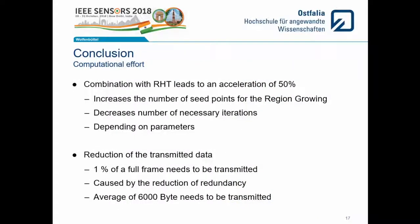In conclusion, we combined two algorithms. The combination of the randomized Hough transformation with the region-growing algorithm leads to an acceleration of the data method of around 50%. This was achieved by increasing the number of seed points and thereby decreasing the number of necessary iterations, which significantly reduced the computing effort. Furthermore, since we described the found planes by the edge points of the polygon found, we can reduce the data that needs to be transmitted to 1% of a full frame per sensor — for example, an average of 6,000 bytes transmitted per shot, compared to 600,000 bytes (600 kilobytes) for a full frame.